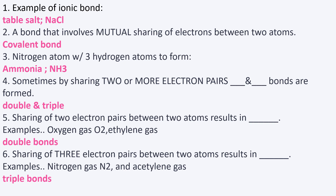Number six — sorry, my dog is barking, she's a German Shepherd and she's big. Number six: sharing of three electron pairs between two atoms results in triple bonds. The number three being capitalized gives you the clue. An example of triple bonds is nitrogen gas, N2, and acetylene gas.